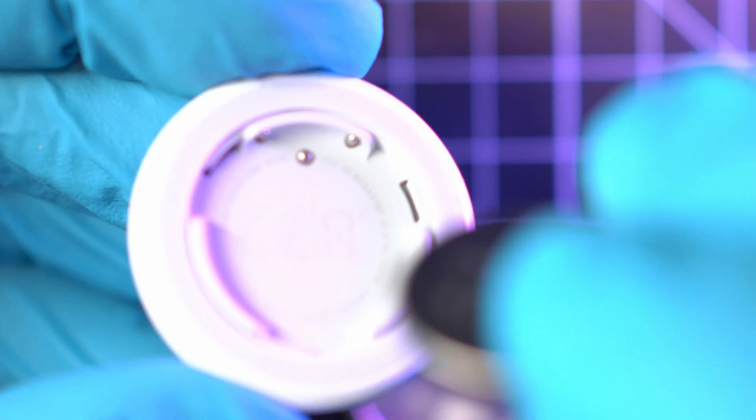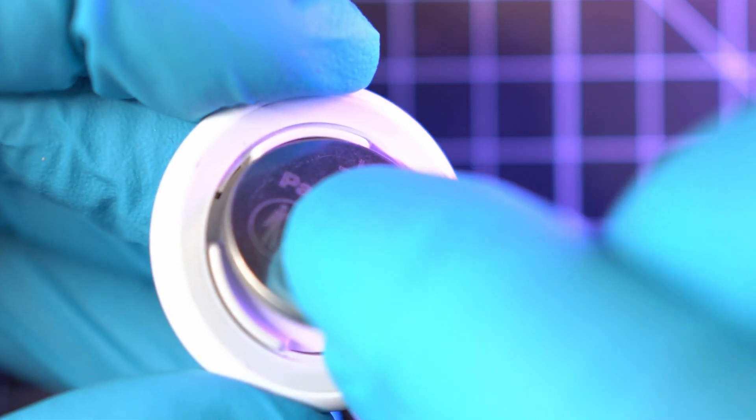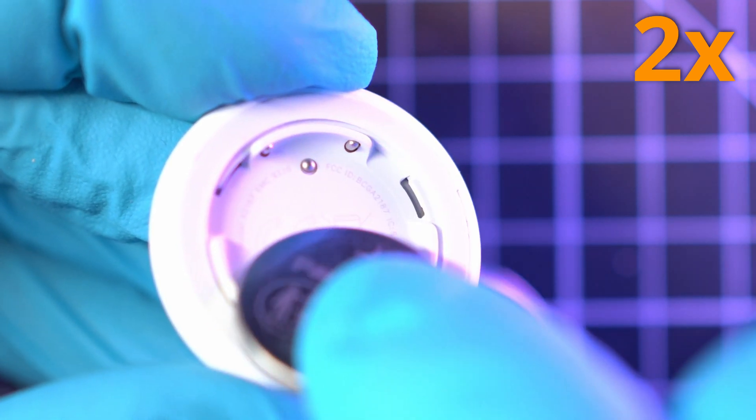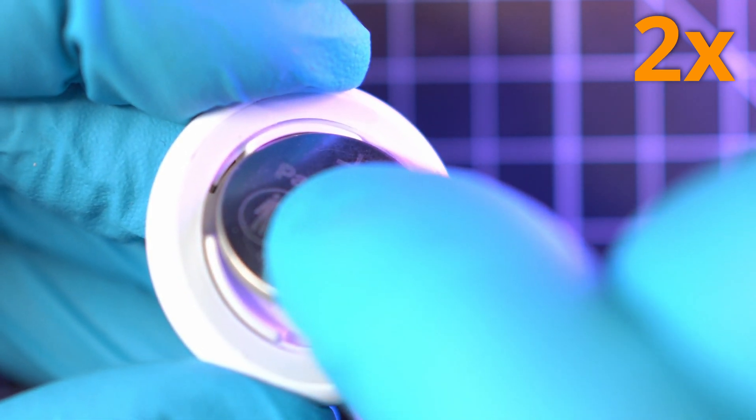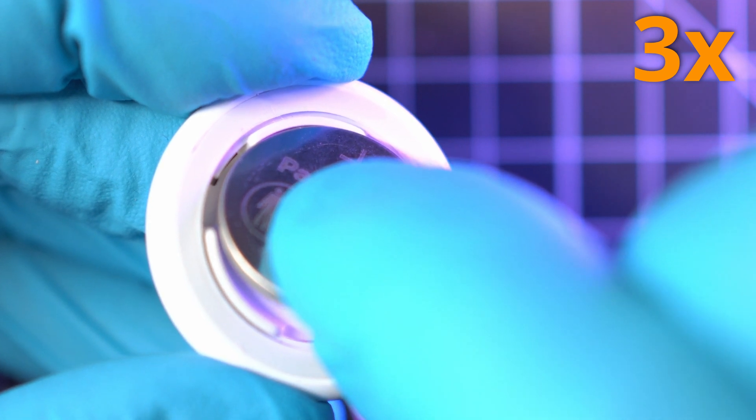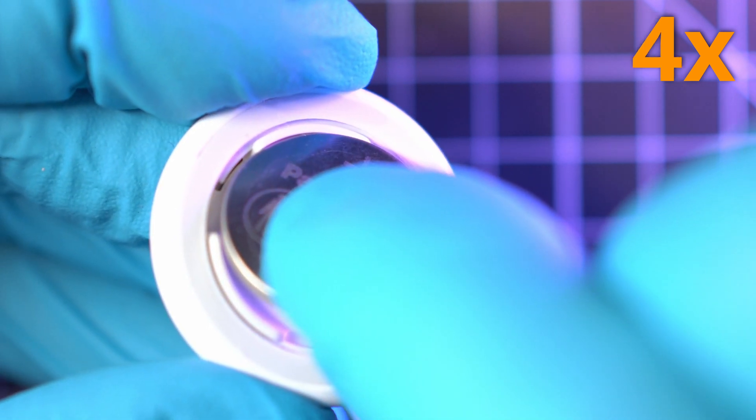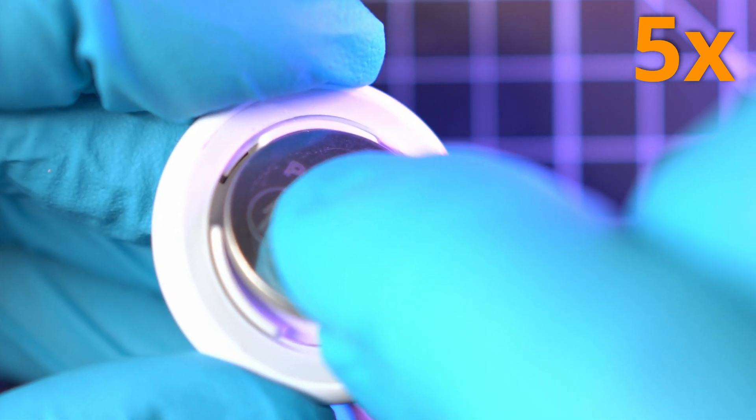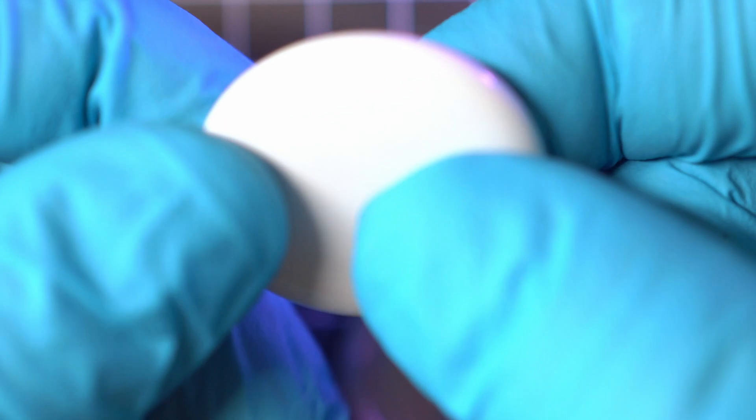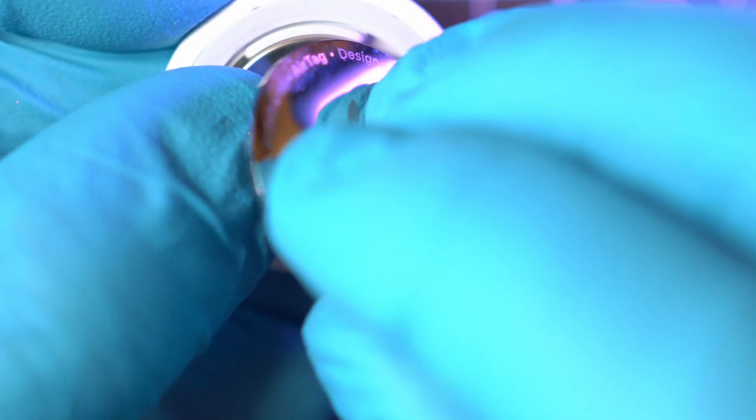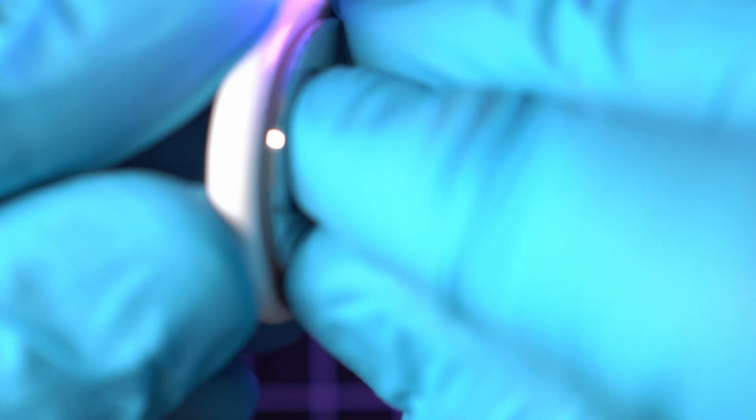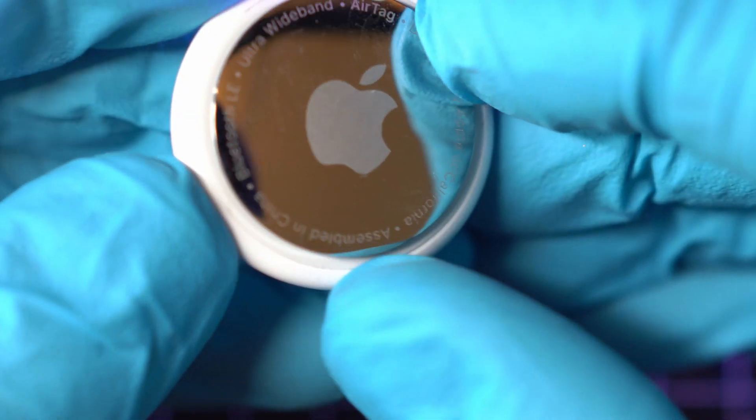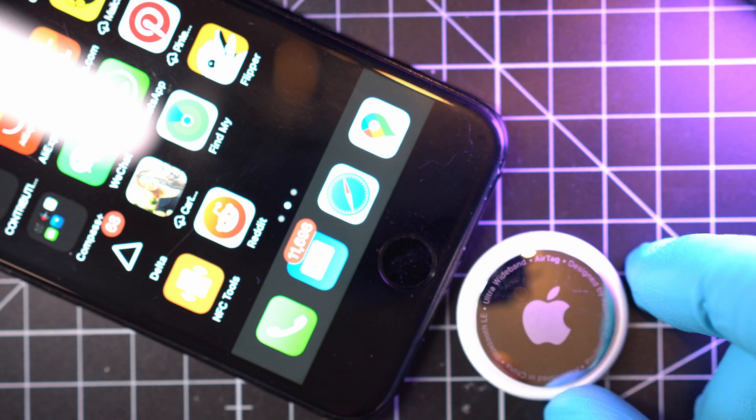To reset the AirTag, refit the battery five times. Each time you have to hear a chime. The last fifth chime will be different and it means you've done it right. You can test it with an iPhone - this pop-up should appear.